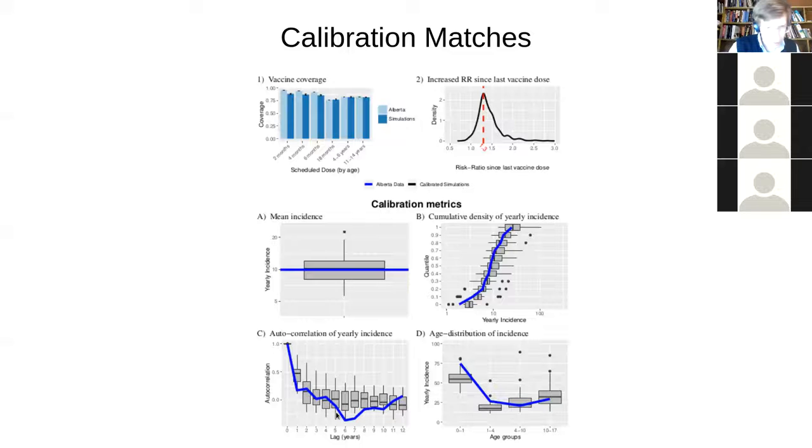Which basically will say, you know, if you had a high number today, how does that associate with whether you're likely to have a high number the next year or the year beyond that, or the year beyond that? Does it sort of having a high number now drain the number of susceptible? So if you have a high number now, it leads to a lot fewer later. And we tried to match this auto correlation function. And this is the one where we didn't do great, but we didn't do horrible either. Also we needed it to match this risk ratio since last vaccine dose and vaccine coverage.